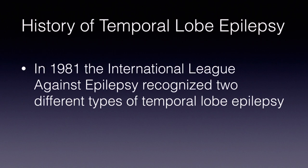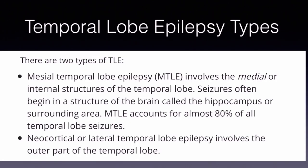In 1981, the International League Against Epilepsy recognized two different types of temporal lobe epilepsy. Mesial temporal lobe epilepsy involves the medial or internal structures of the temporal lobe. Seizures often begin in the hippocampus, which is where a lot of your memory is stored, or a surrounding area. Mesial temporal lobe epilepsy accounts for almost 80% of all temporal lobe seizures, so it's the most likely type a patient will have.